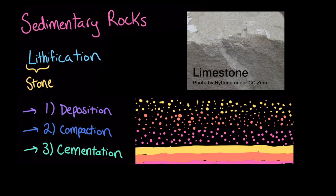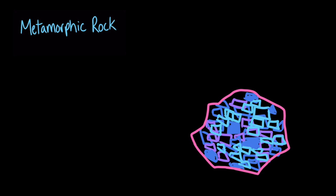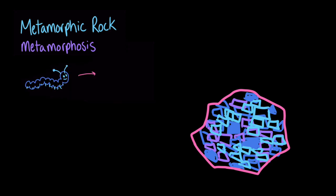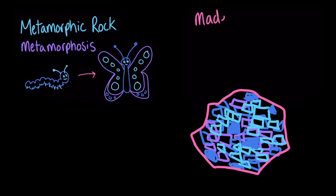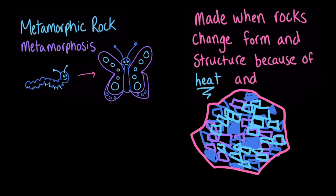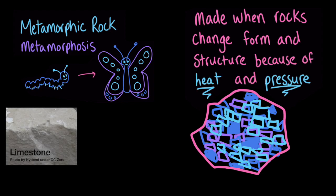But once a sedimentary rock has been created, it doesn't mean that it is done changing. Sometimes, a rock is squeezed or heated so much that the minerals inside it actually change composition. It is now a metamorphic rock. You might have heard of the word metamorphosis, which describes when something changes from one form and structure to another. Like when a caterpillar turns into a butterfly, metamorphic rocks are made when igneous, sedimentary, or even other metamorphic rocks change form and structure because of heat and pressure. For example, when the sedimentary rock limestone gets put under a lot of heat and pressure, it can turn into marble.